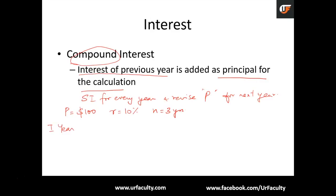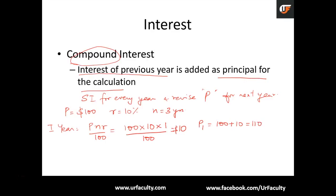Let's take an example. The principal is $100, the rate of interest is 10%, and N equals 3 years. In a compound interest calculation, you do it for every year. For the first year, using PNR/100 with N=1: 100 × 10 × 1 / 100 = $10 interest. The new principal for the next year is the previous principal plus the interest: 100 + 10 = 110. For the second year: 110 × 10 × 1 / 100 = $11.